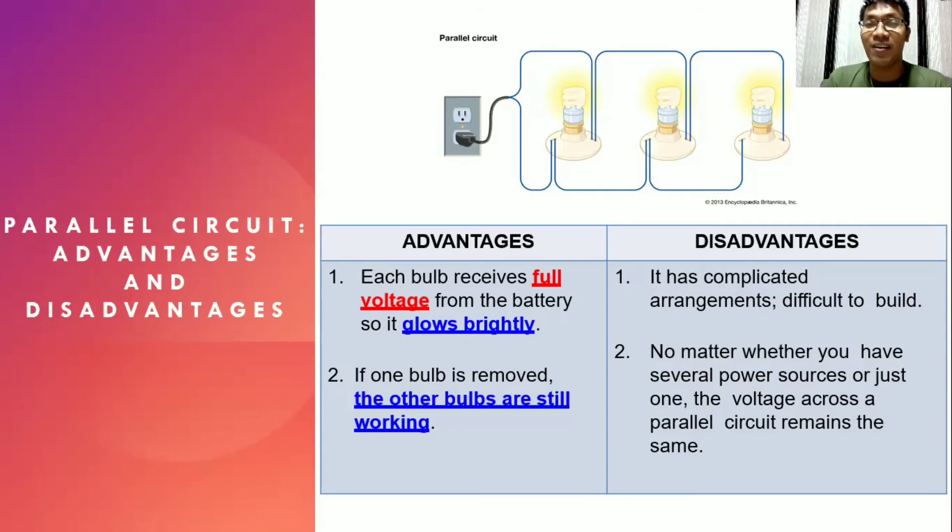On the other hand, the disadvantages of a parallel circuit are the following. Number one, it has complicated arrangement and difficult to build, since we need several pathways. Number two, no matter whether you have several power sources or just one, the voltage across a parallel circuit remains the same, simply because the voltage in each bulb would be the same as the source.